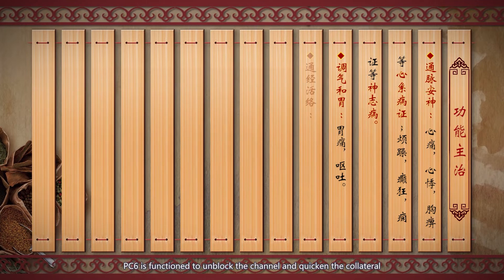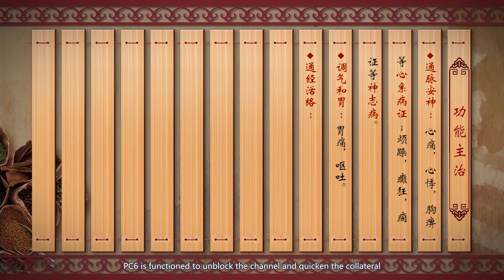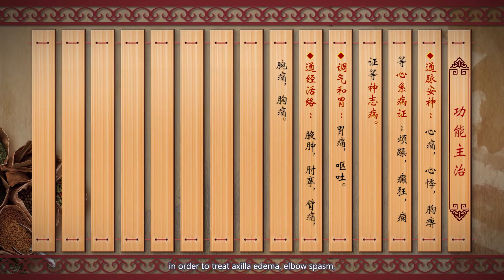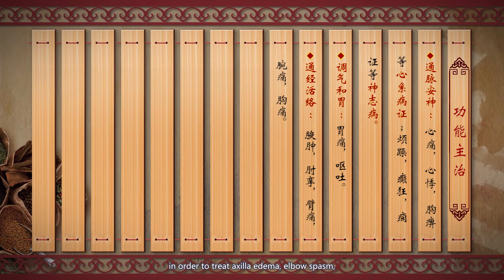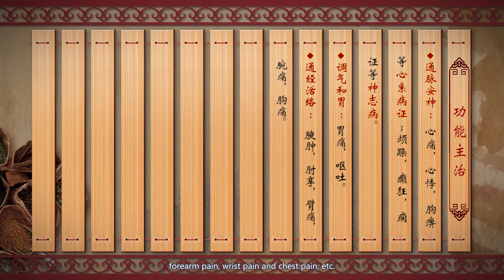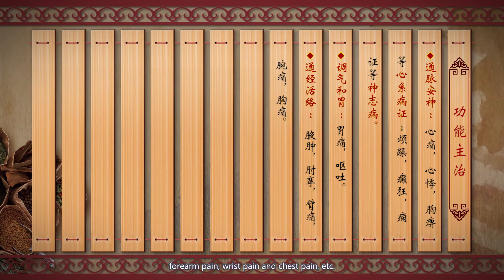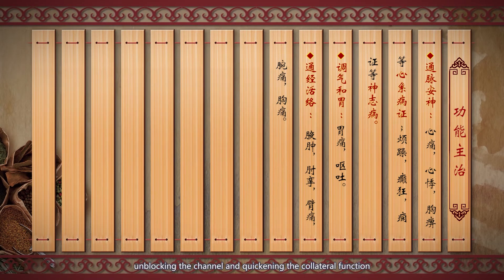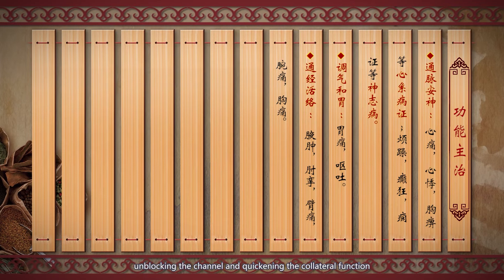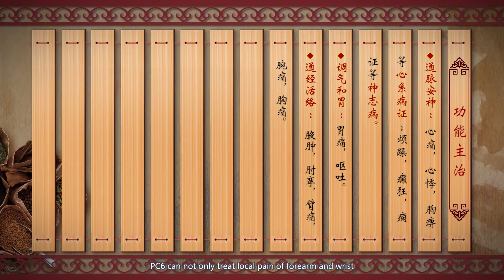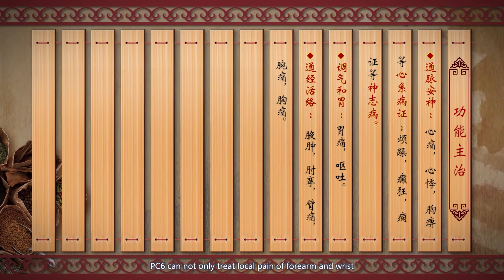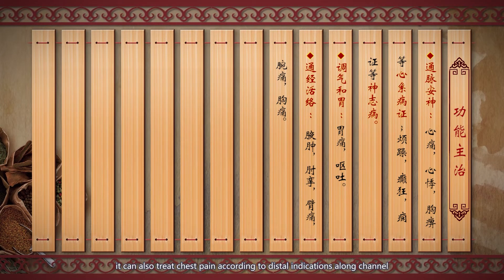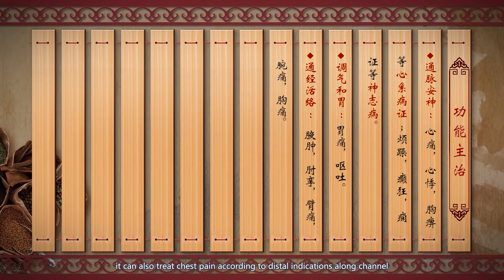Third, PC6 functions to unblock the channels and quicken the collaterals, treating external edema, elbow spasm, forearm pain, wrist pain, chest pain, and lateral costal pain. PC6 can not only treat local pain on the forearm and wrist but can also treat chest pain according to the distal indication along the channel.